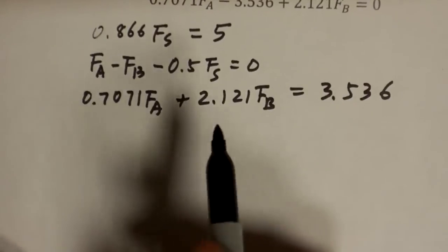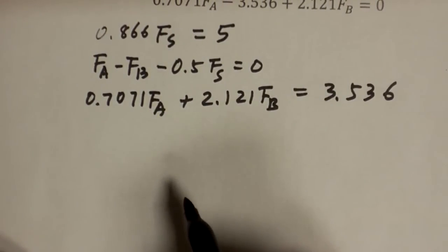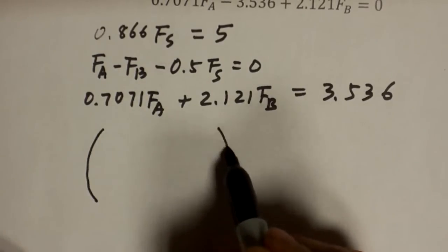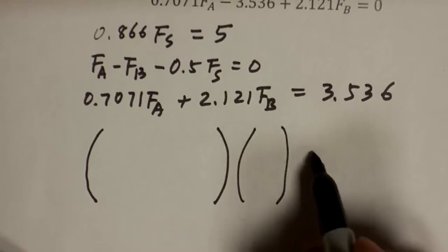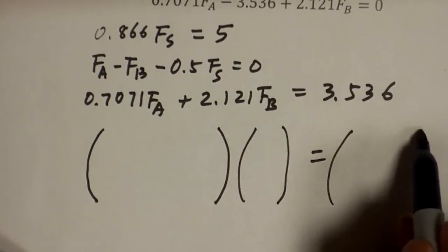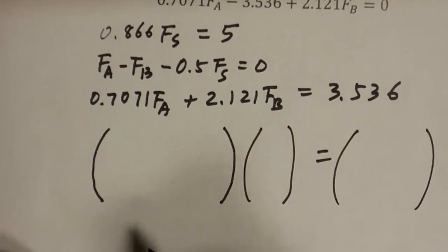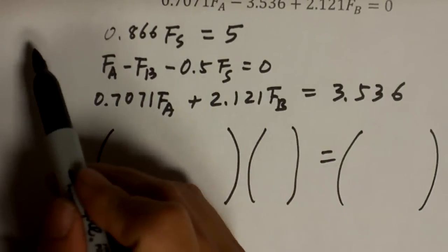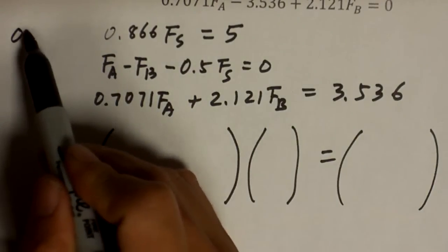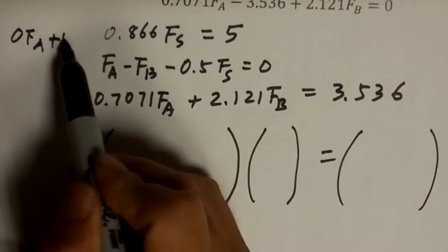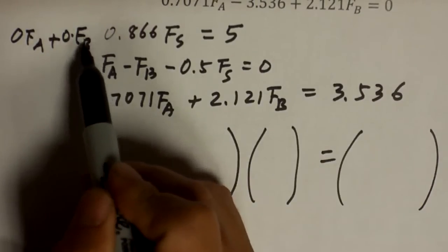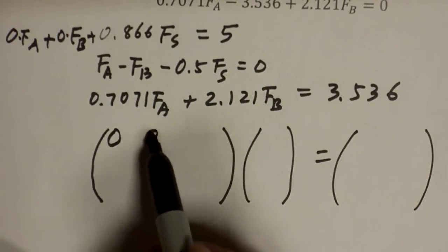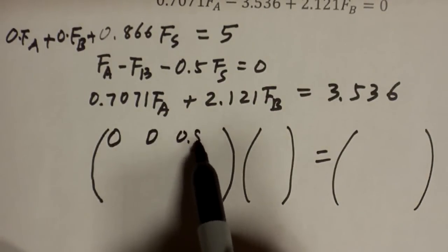Once you make it into this format, you're going to use AX equal to b, where this matrix A is the matrix of coefficients. When you see this first equation, you should really think of this as 0 times Fa plus 0 times Fb. And write down 0, 0, 0.866.